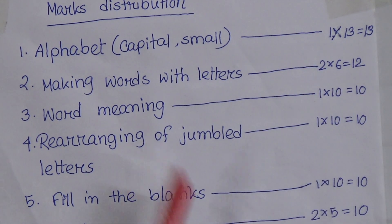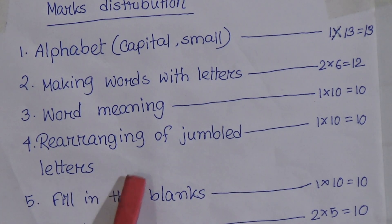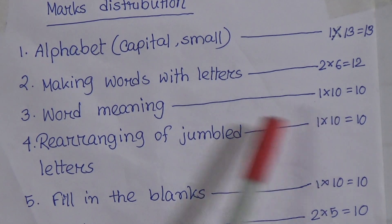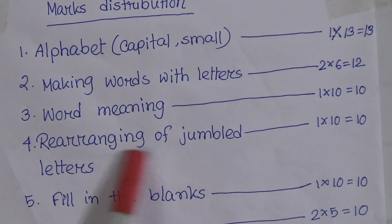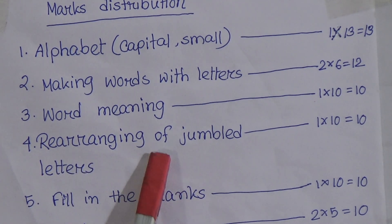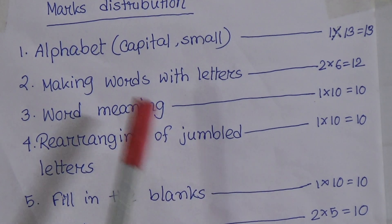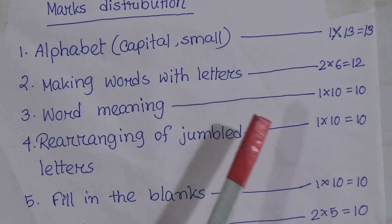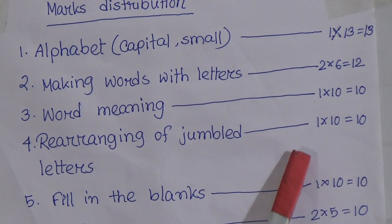Now, rearranging of jumbled letters — there will be 10 words whose letters are jumbled and you have to write the correct word. Each word contains one mark, so 10 words equals 10 marks.